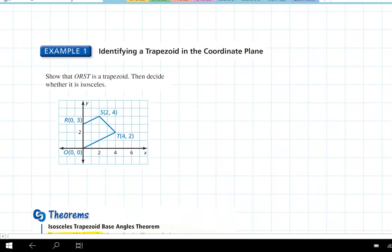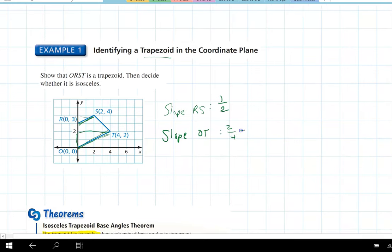But first, if we want to identify a trapezoid in the coordinate plane, what we need to know in order for it to be a trapezoid is for it to have one set of parallel bases. So we can tell looking here, we can tell that RS should be parallel to OT. So what we want to do is we want to look at the slope of RS and the slope of OT. So the slope of RS, well the rise is 1 and the run is 2. So the slope of RS is 1/2. Then we want to look at the slope of OT and the rise is 2 and the run is 4. So that's a slope of 2/4, which is also 1/2. So we know that RS is parallel to OT. So it's definitely a trapezoid.